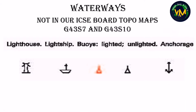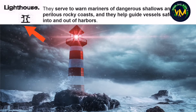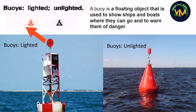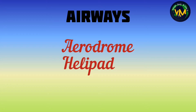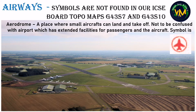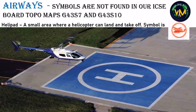Next we move on to waterways. All these symbols are not found in our ICSE topographical maps because we do not have coastal areas in maps G43-S7 and G43-S10. Just for your understanding, I will quickly show pictures: this is the symbol for a lighthouse, a lightship, lighted and unlighted buoys, and the anchorage. Moving on to airways — the two symbols for airways are also not found in our topographical maps. The first symbol is an aerodrome and the second is a symbol for a helipad. If you happen to see an aerodrome or helipad symbol, do let me know in the comments.